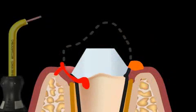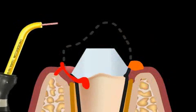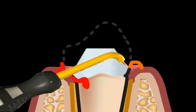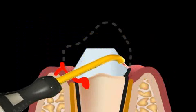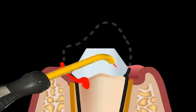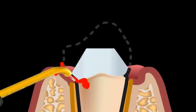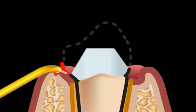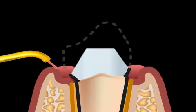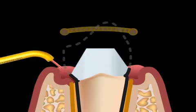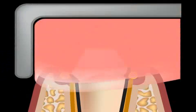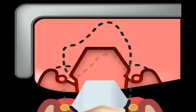In order to obtain precise impression margins, the impression material must be able to flow around the teeth margins. This means there can't be any gums, blood, or saliva surrounding the tooth. In order to achieve this, any bleeding must be stopped — for example with a cotter — and the gums must be moved to the side, perhaps with the aid of threads.